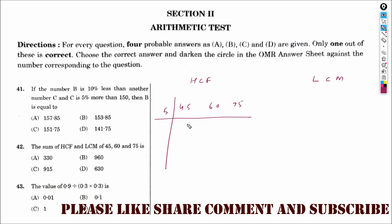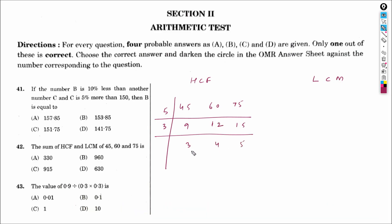Factorising: 45 = 5 × 9, 60 = 5 × 12, 75 = 5 × 15. Dividing further by 3: we get 3, 4, and 5 respectively. There is no common factor among 3, 4, and 5. Therefore, HCF will be the product of common factors: 5 × 3 = 15.